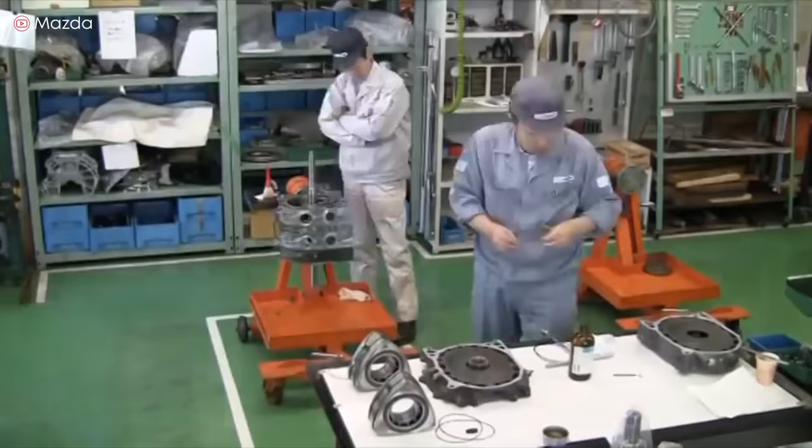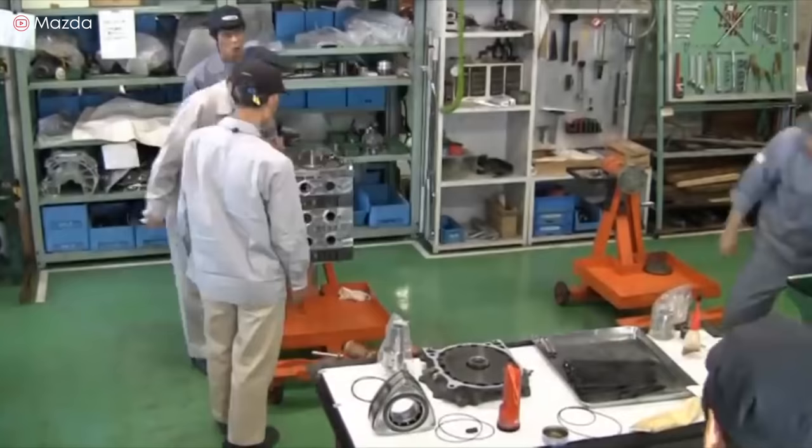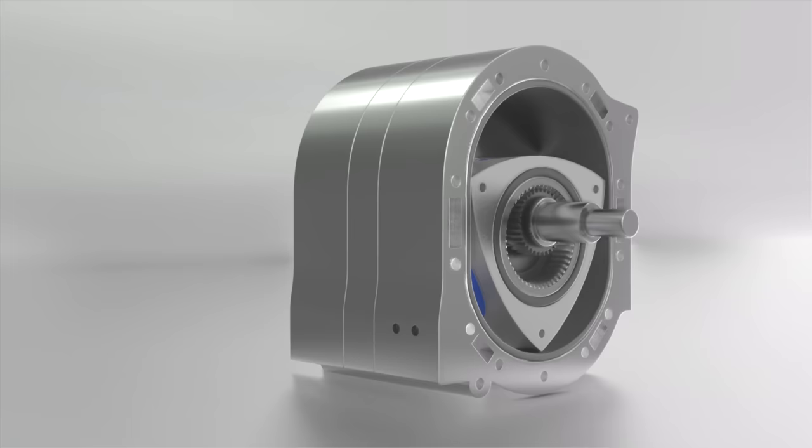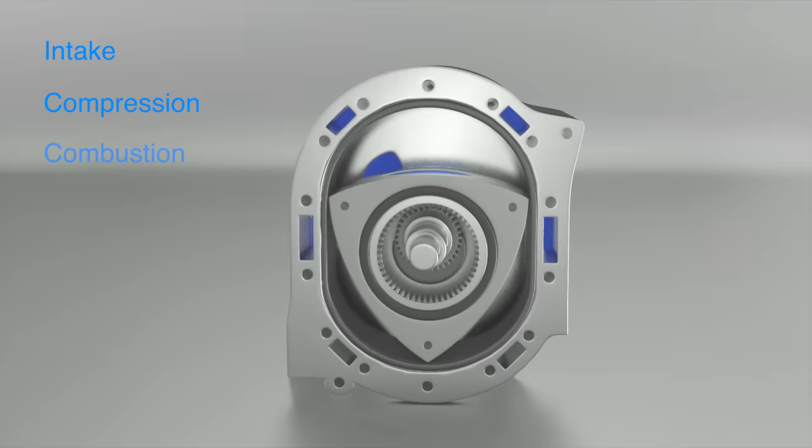The rotary motor has the same four-stroke cycle as its competitor, the piston engine. One working cycle of the engine consists of four strokes and one revolution of the rotor, or three revolutions of the eccentric shaft. The first stroke is the intake phase. The second is compression, the third is combustion, and the fourth is exhaust.